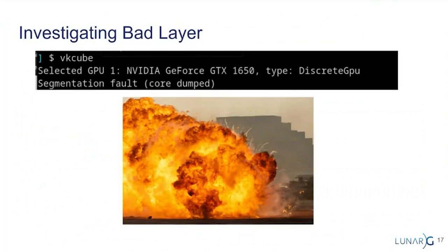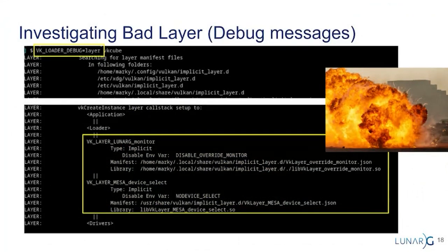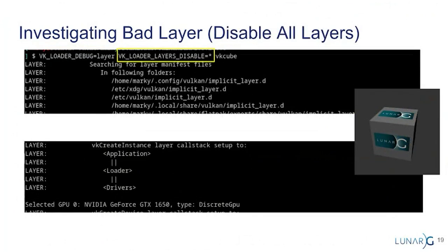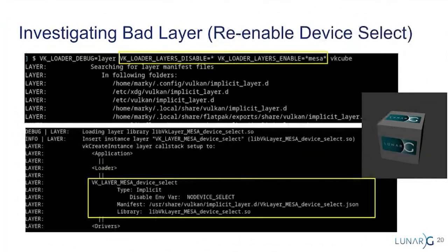Let's use an example of a bad layer. I run cube, it starts up, and I get a segfault. What can I do? First thing I do: turn on VK_LOADER_DEBUG, set it to layer. I see that we have two layers. My first option is to disable all my layers. Guess what — cube works. So I can see it's searching for layers, but I get all the way down to creation of instance and everything works. Let me go back — I'll disable all layers, but re-enable Mesa. It still works and I still see my Mesa implicit layer. So it's not Mesa, it must be the other thing.